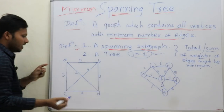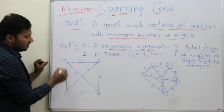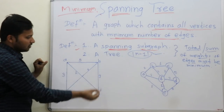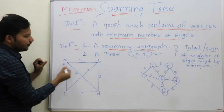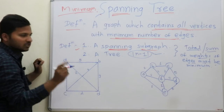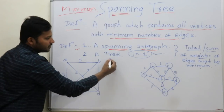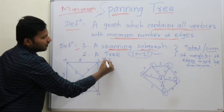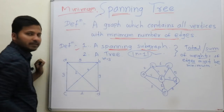So now see — vertices are 4, so edges should be 3. Number of edges should be 3.